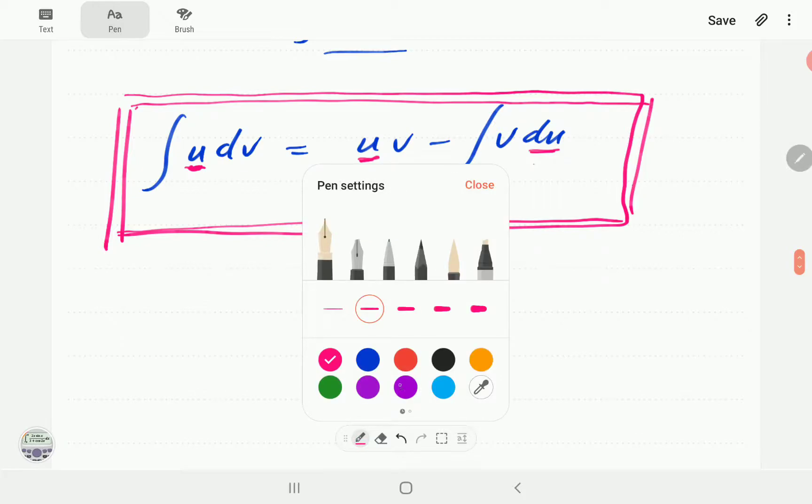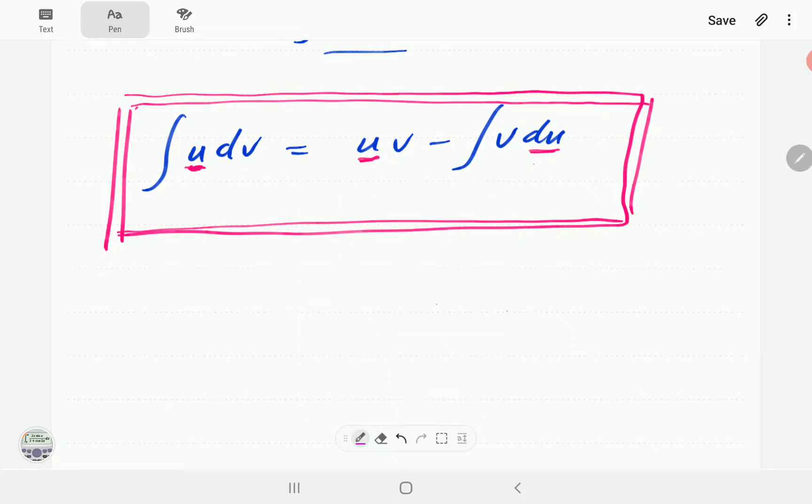So what happens in this method is whatever we're going to choose to be our u, we differentiate. This process of getting du from u is by differentiation.